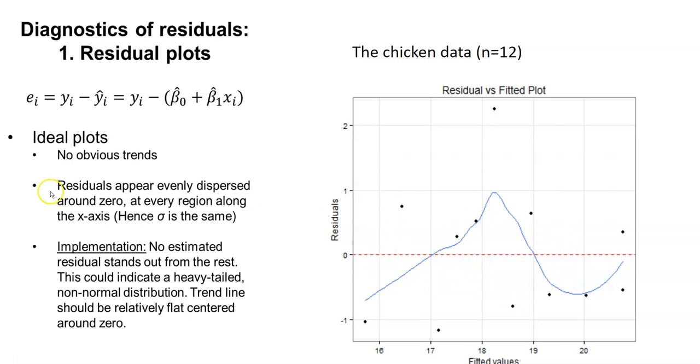Remember, we can use the formula. We represent the residual by e sub i. That equals our observed value, y sub i, minus y i hat, our estimated value. And so that equals the observed value, y sub i, minus the prediction or the estimate we get from our regression equation.